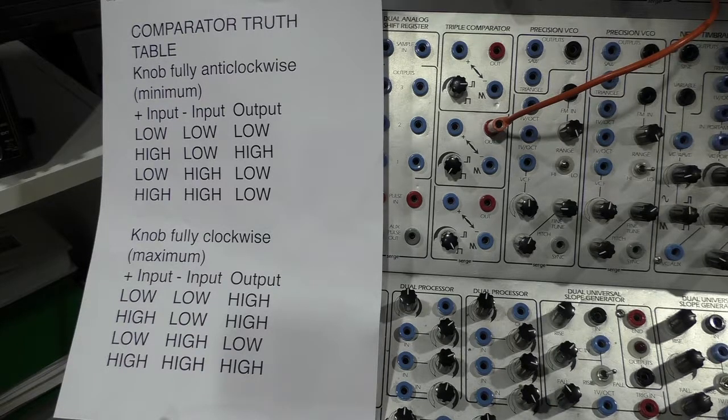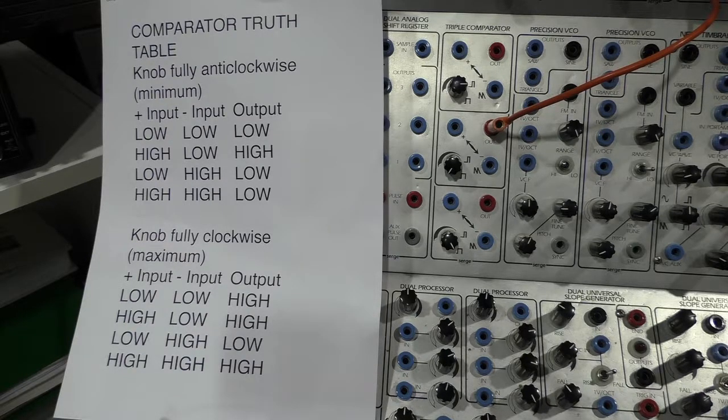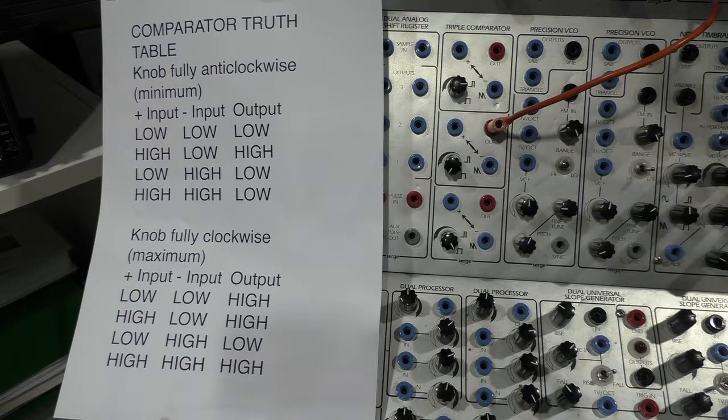It's useful to have logic gates on modular synthesizers for various things. For example, if you have an AND gate, you can use it to shorten or lengthen gates that you're using to create envelopes. You can AND together the gate of the sequencer with a signal from a transient generator in order to get it shorter or longer.